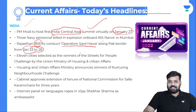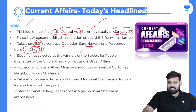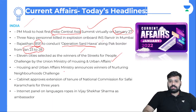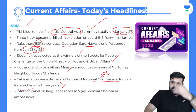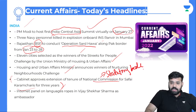Eleven cities have been selected as winners of the Streets for People Challenge by the Ministry of Housing and Urban Affairs. The ministry also announced winners of the Nurturing Neighbourhoods Challenge. Cabinet approved extension of the tenure of the National Commission for Safai Karmacharis for 3 years — this is a statutory body.